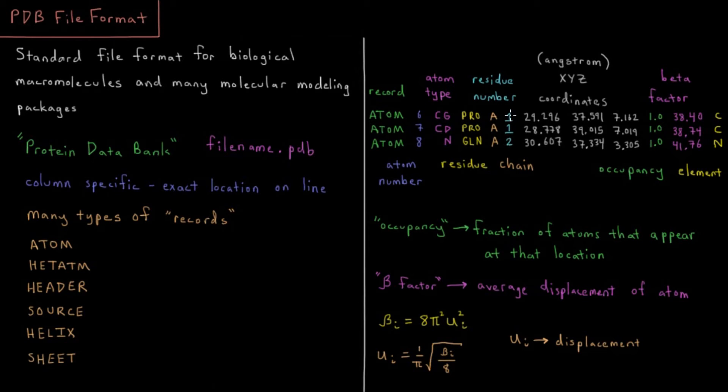Residue number. What amino acid are you within your specific chain? Maybe this protein we're looking at has a hundred amino acids. Number one, number two, et cetera.